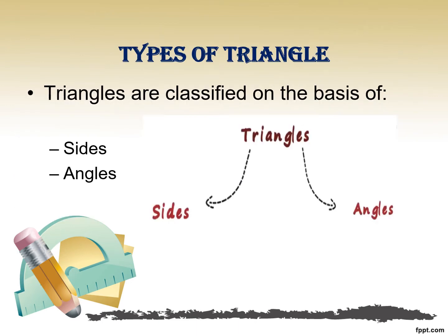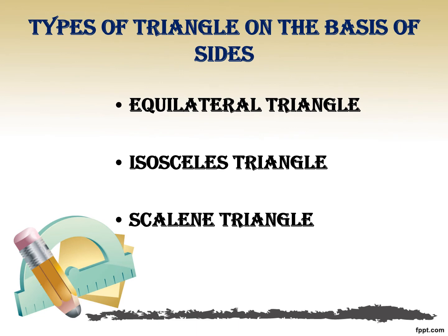Now let's understand the various types of triangles and on what basis they are classified. Triangles are classified on the basis of sides, i.e. the length of a side, and on the basis of angles, i.e. the measure of angles. Today we will be studying about the classification of triangles on the basis of sides — equilateral triangle, isosceles triangle, and scalene triangle.